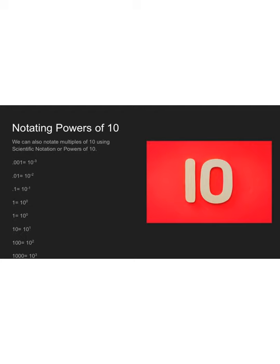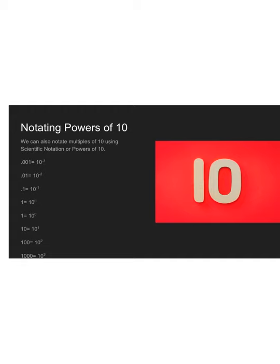We can also notate multiples of 10 using scientific notation or powers of 10, which makes writing large numbers shorter. For example, instead of writing 1,000 with three zeros, I can write 10 to the third power — that 3 shows I have three zeros. A plain 1 has no zeros, so it's 10 to the zero power. After the decimal, it becomes negative 1, negative 2, negative 3, and so on. For a million, instead of writing it out, I can write 10 to the sixth power.